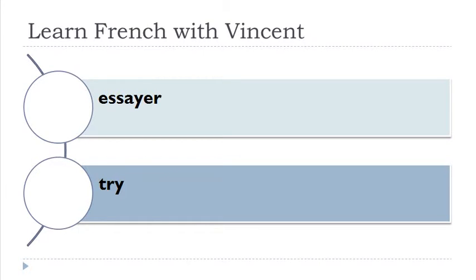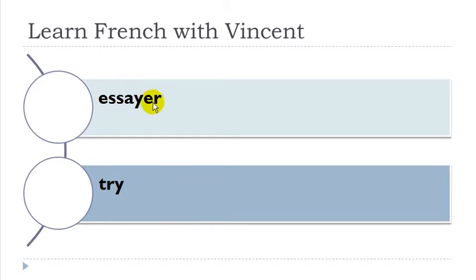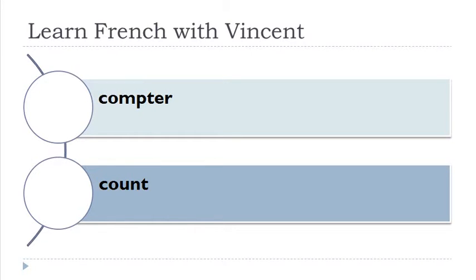Essayer. Exactly the same concept as previously — you've got your 'y' here, but just consider that you've got one 'e' here with the 'a', so it produces the sound 'a', and then you've got another 'e' here and you get the sound 'y'. Essayer. Essayer.